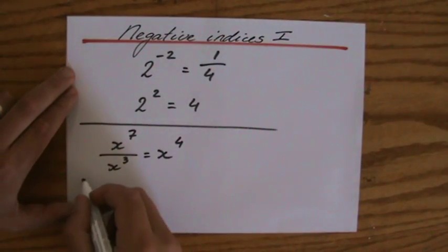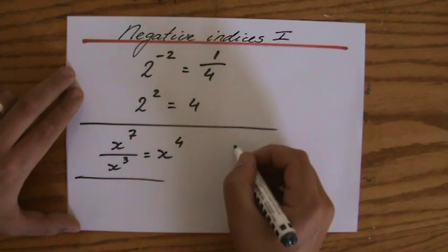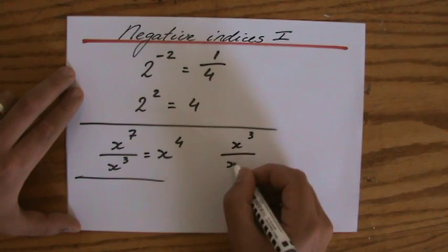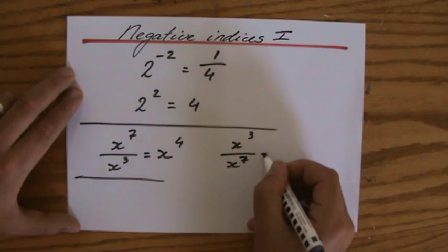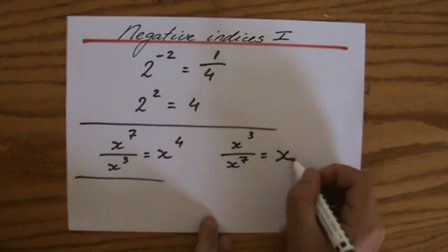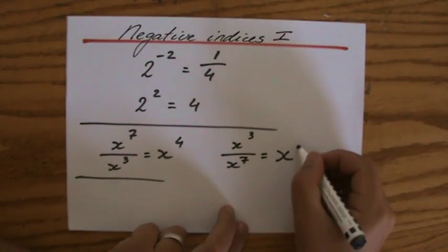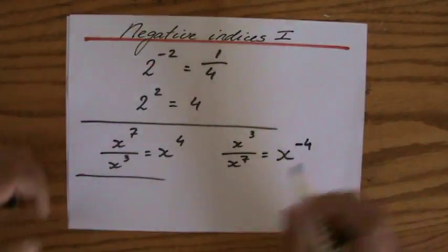But let's say on a different question, I'll turn it around: x to the power 3 over x to the power 7. Second law of indices—the base is the same, we're dividing, so I subtract the indices. 3 minus 7. Now the answer to that is minus 4. Oh, hang on a minute.